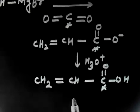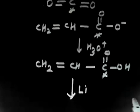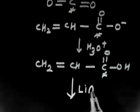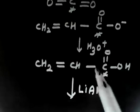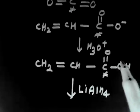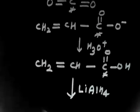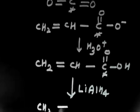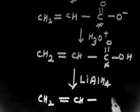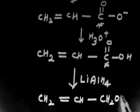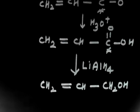The next step is lithium aluminum hydride, LiAlH4, which is a strong reducing agent. It will not reduce the double bond — it will reduce the acid. So you will have CH2=CH and H, reducing the acid to give CH2OH. This is compound Z.